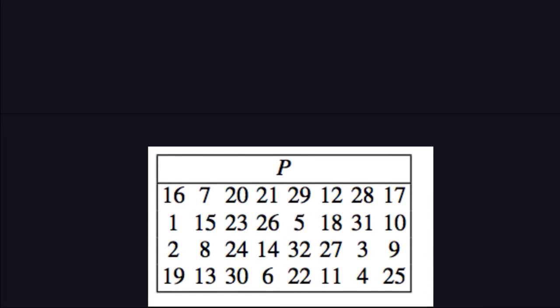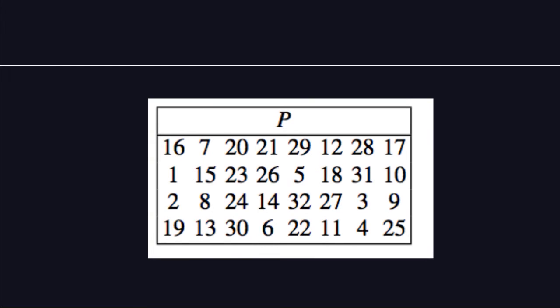That is the table for the permutation, and as you can imagine it works exactly the same as the initial and final permutation. We read this table from the first row at the top, left to right — the same way you read in English. What the values mean is exactly the same as for the other permutation tables. So for the first position here, the value is 16.